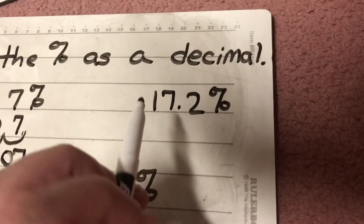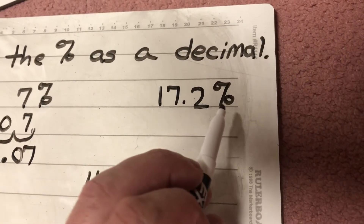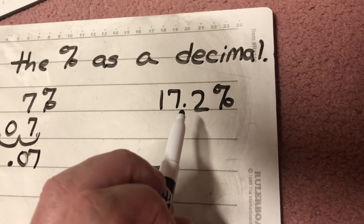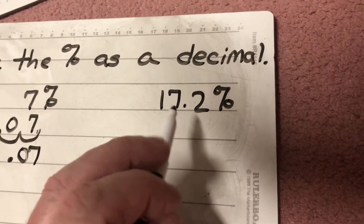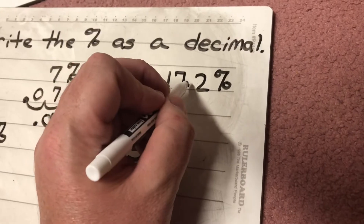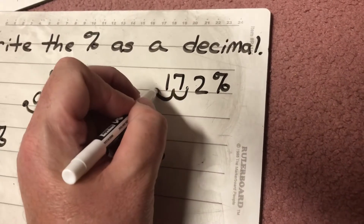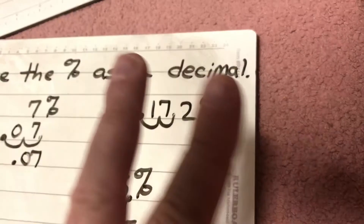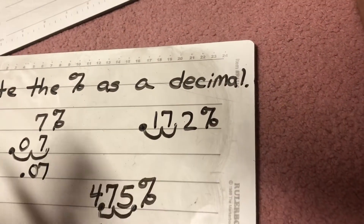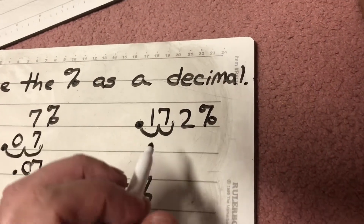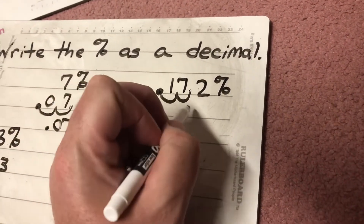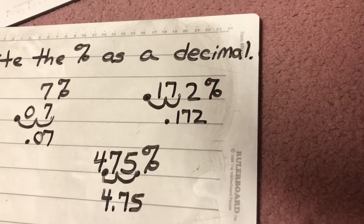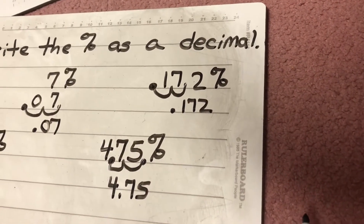Last one in this section: 17.2 percent. Same idea. Here's another one where there's already a decimal. I just take that decimal and move it twice to the left because I'm dividing by 100 — there are two zeros in 100. I end up with 0.172, or one hundred seventy-two thousandths.